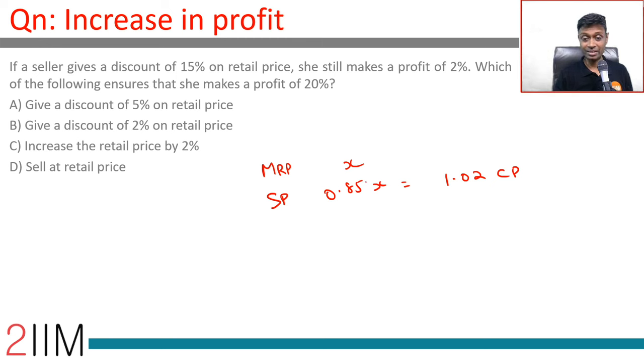Or 0.85, 0.17 into 6, or selling price, which is 0.85X is 1.02CP.